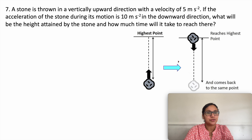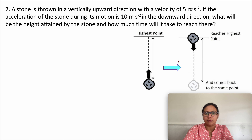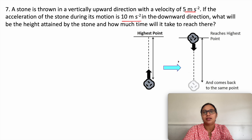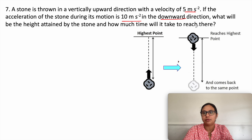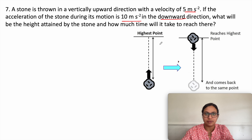Next question: a stone is thrown in a vertically upward direction with a velocity of 5 meters per second. If the acceleration of the stone during its motion is 10 meters per second squared in the downward direction, what will be the height attained by the stone and how much time will it take to reach there?